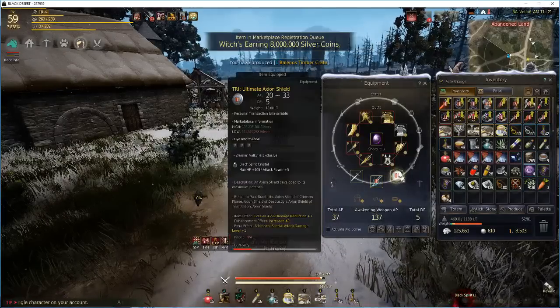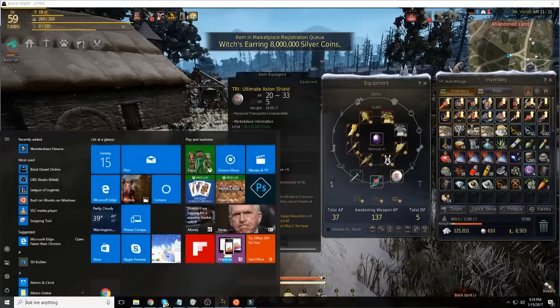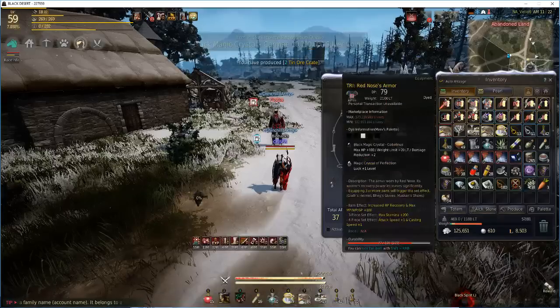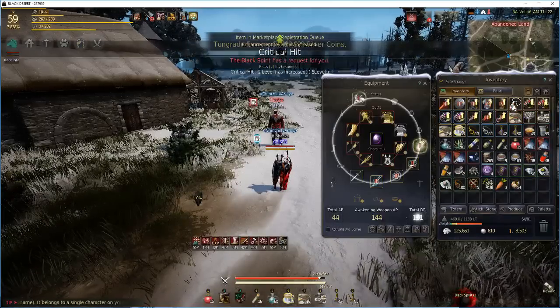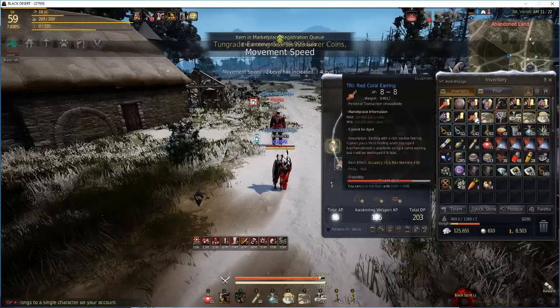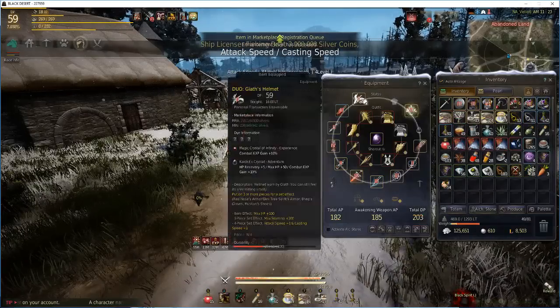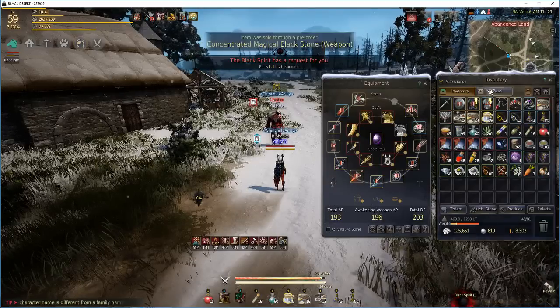So if I go back to my graph real quick, if you notice that if I assume that it's applying 214 AP, which is what my AP is if I equip all of this gear, that's sheet AP is 209. 214 is if we assume that that hidden plus 5 is actually contributing.